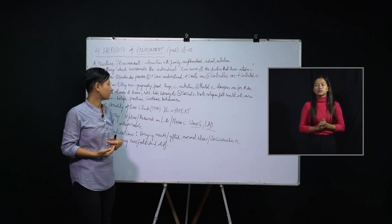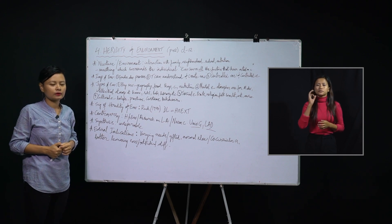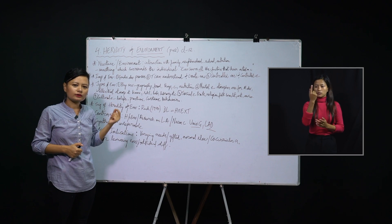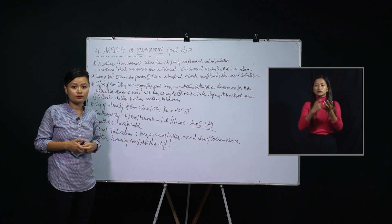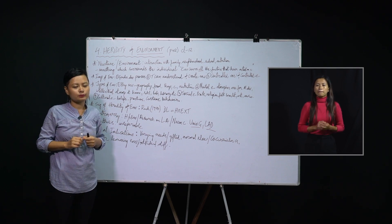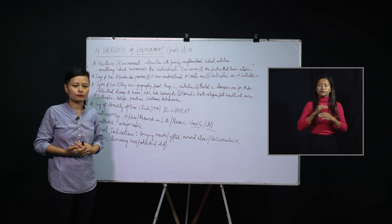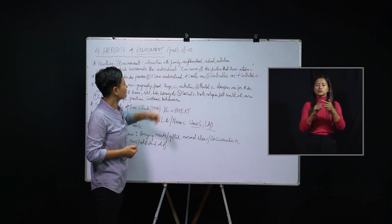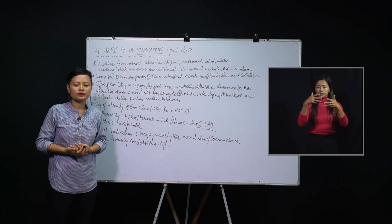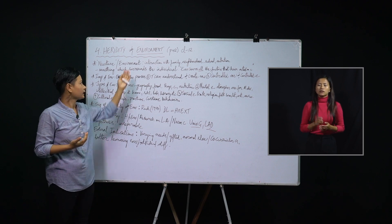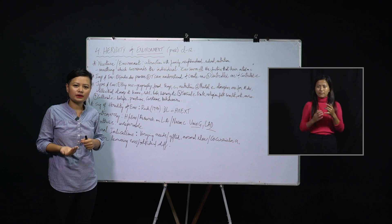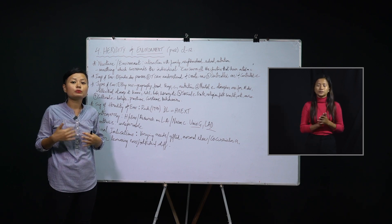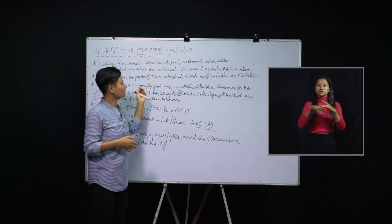Environment is important because it guides the development process of the individual. Just like hereditary, environment is also very important for individual development. We can also create an artificial environment — depending on the situation or the individual, we can mold his or her environment. Environment is artificial in nature in the sense that we can manipulate it.